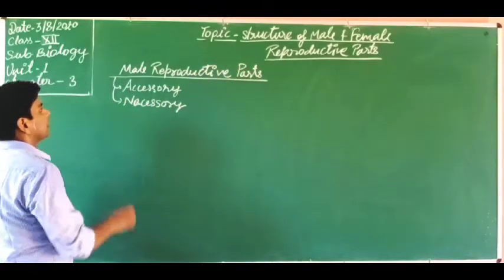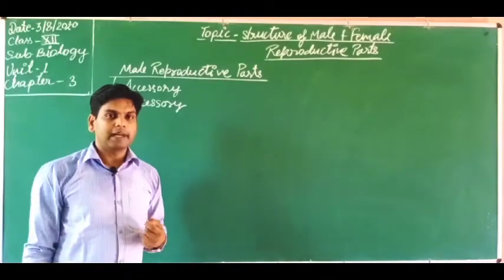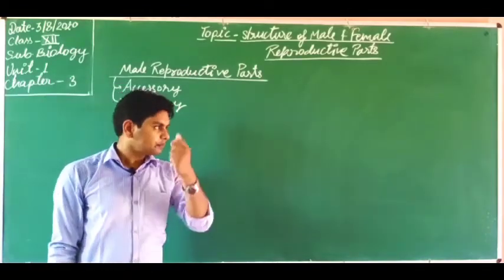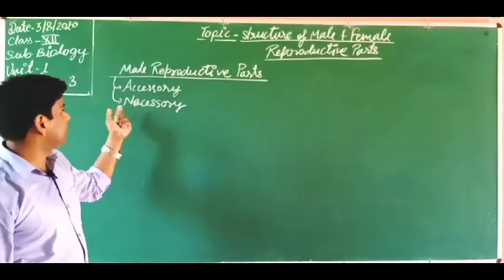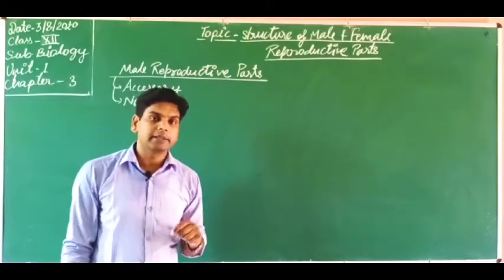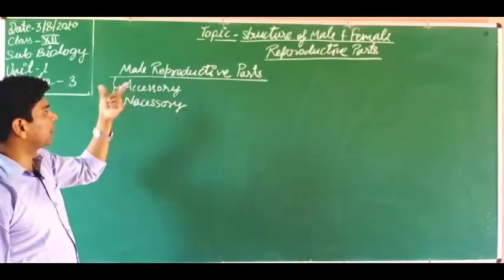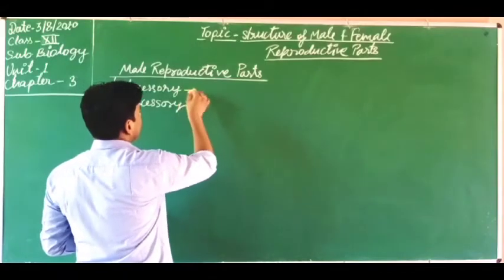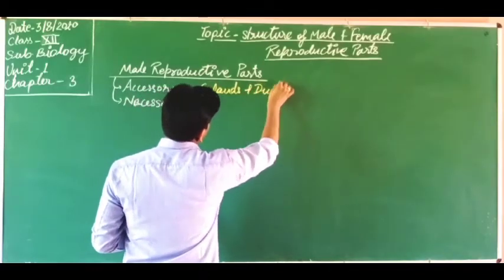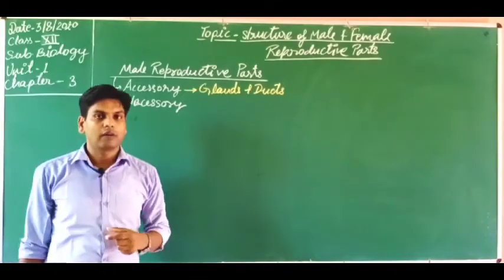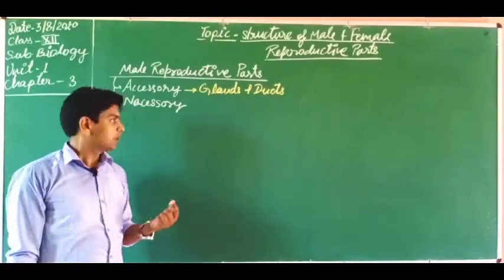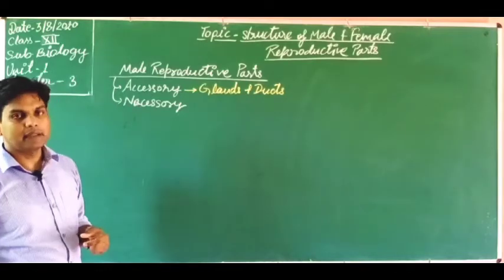The male reproductive part has two types: accessory reproductive parts and necessary reproductive parts. Accessory parts are those reproductive parts which do not directly participate in gamete formation — these include glands and ducts. Necessary parts are the parts which directly participate in gamete formation. In the male reproductive system, the necessary part is the testes.